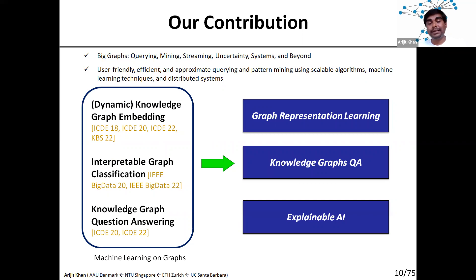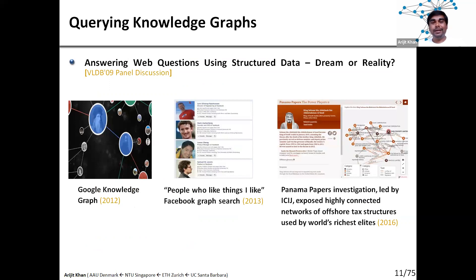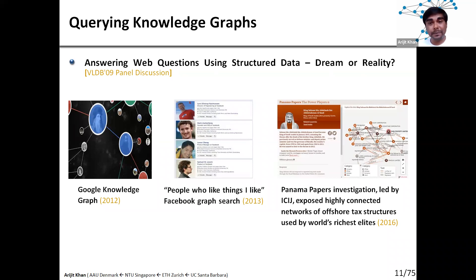We are working on interpretable graph classifications and knowledge graph-based question answering, under broad topics like graph representation learning, knowledge graph-based question answering, and explainable AI. In this talk I will primarily focus on our work on querying knowledge graphs. Knowledge graphs are very important — Google started back in 2012 with knowledge graph-based query answering, then in 2013 Facebook introduced Facebook Graph Search where you can write textual queries like "people who like things I like." In 2016, during the Panama Papers investigation, researchers used graph-based techniques to identify important hidden links across rich people and companies.